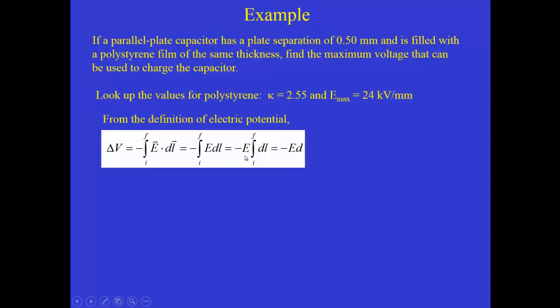In that geometry, it's a good approximation to state that the electric field has a constant magnitude in between the plates, so it comes outside. And we find, as we know for a uniform electric field, that the potential difference is simply minus the electric field magnitude times the distance.